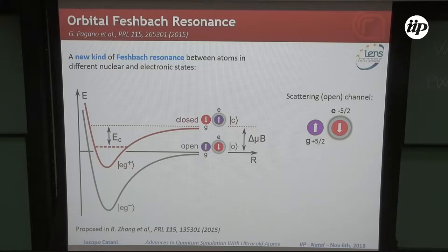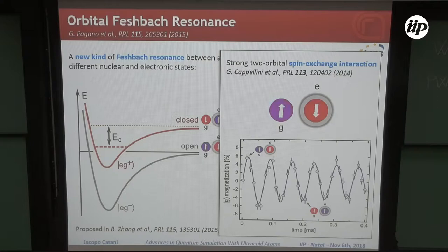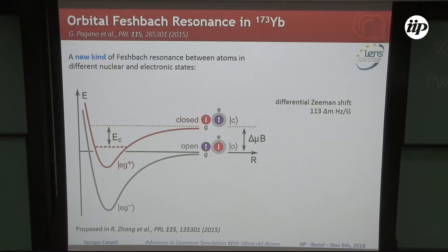The difference with respect to the standard Feshbach resonance is that now the coupling mechanism giving you the value of the crossing is the spin exchange interaction rather than the hyperfine mixing. We recently have been able to detect this kind of interaction also in a coherent way. The interaction is there. Now we turned to trying to find this resonance.